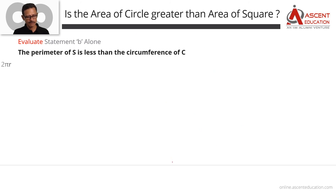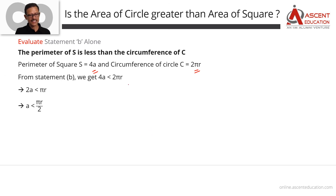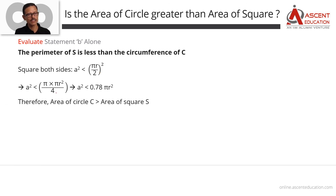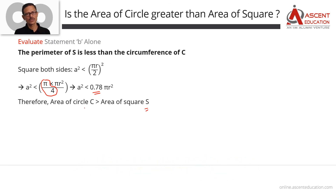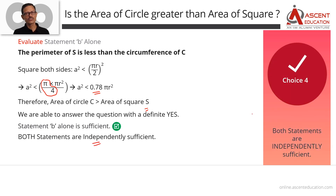To summarize statement B: perimeter of the square 4a < circumference of the circle 2πr. Decoding: a < πr/2. Squaring both sides: a² < π²r²/4 = (π/4)·πr². Since π/4 ≈ 0.78, a² < 0.78·πr², which means a² is certainly less than πr² itself. So the area of the square is less than the area of the circle — a definite yes. A alone was sufficient, B alone is also sufficient. Answer is choice 4.